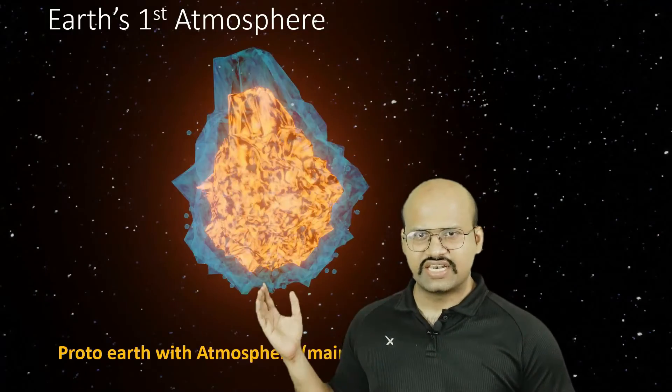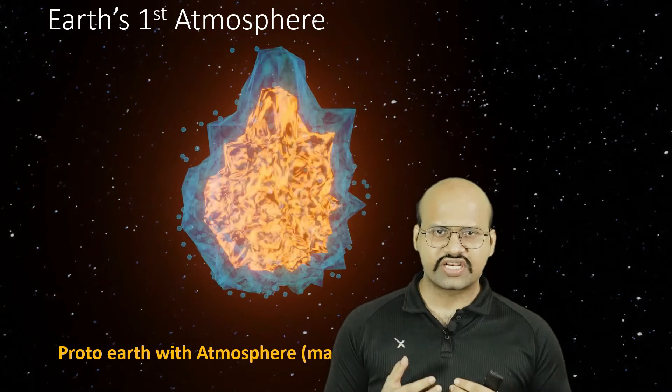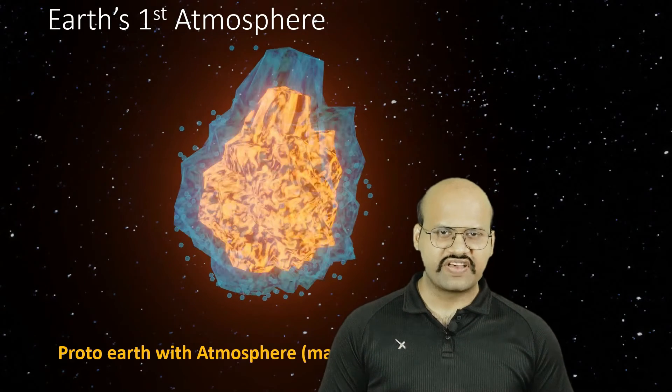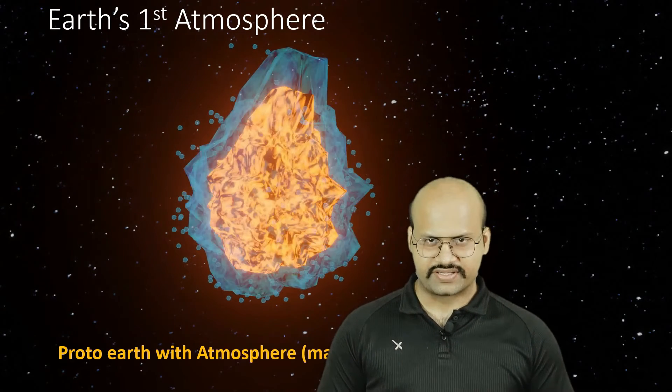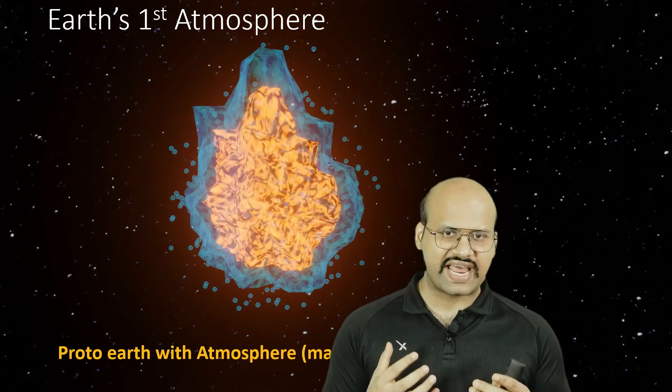The Earth was formed from a solar nebula which mainly consisted of hydrogen and helium gas. So when the Earth was formed, we had an atmosphere which was mainly hydrogen and helium. But hydrogen and helium are very light elements and the gravitational pull of Earth was not that strong.